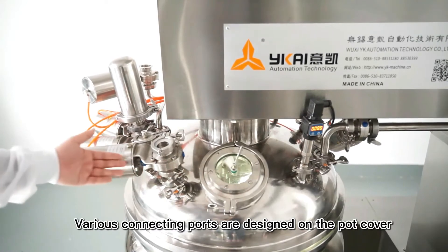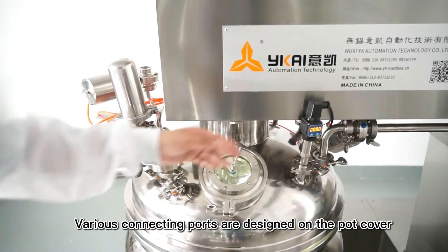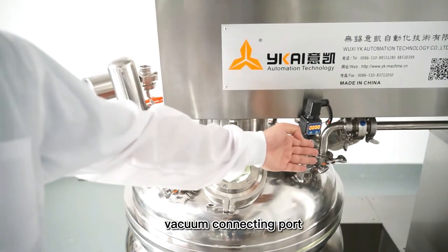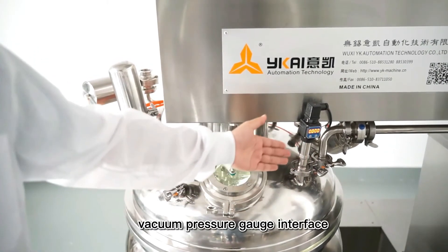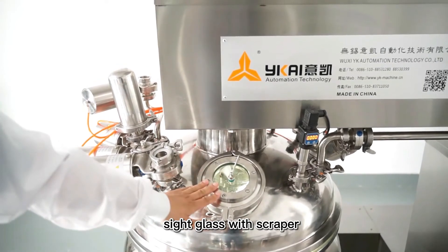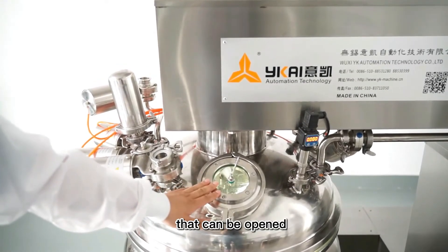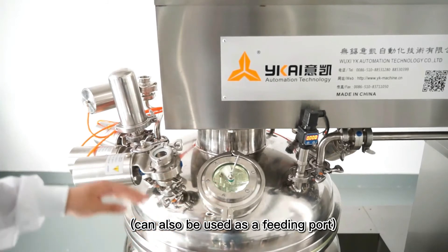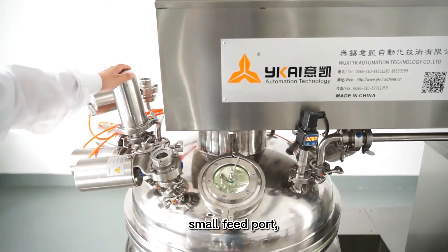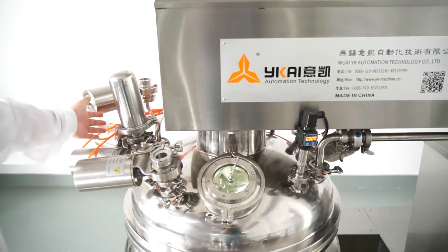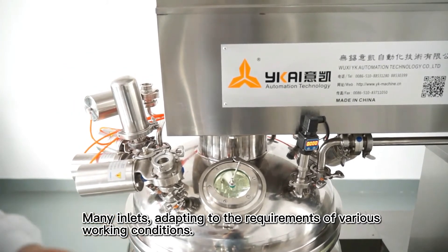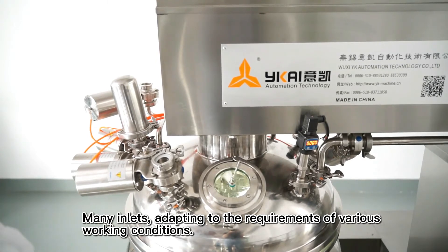Various connecting ports are designed on the pot cover, including the light connecting port, vacuum connecting port, vacuum pressure gauge interface, side glass with scraper that can be opened and can also be used as a feeding port, another feed inlet, small feed port, air filter, and CIP port. Many inlets adapting to the requirements of various working conditions.